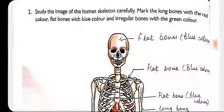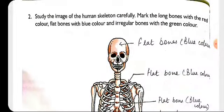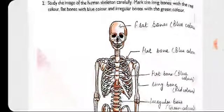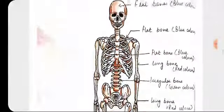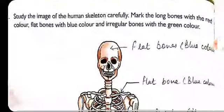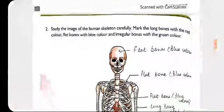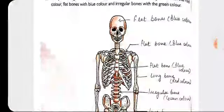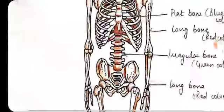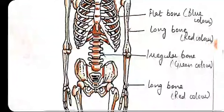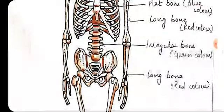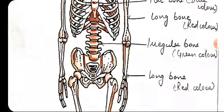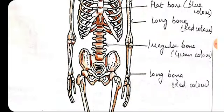The next activity is a coloring exercise: you will color the flat bones blue, the long bones red, and the irregular bones green.